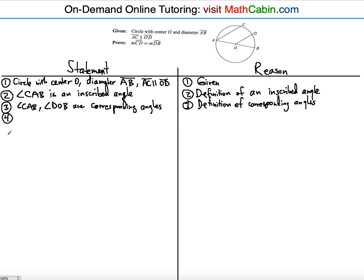Not only are they corresponding, but they're also equal. So the measure of angle CAB is equal to the measure of angle DOB. The reason is that OD and CA are parallel, as given, so the definition of corresponding angles applies.